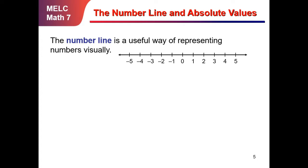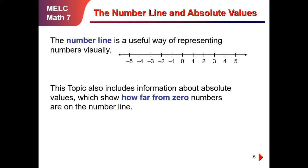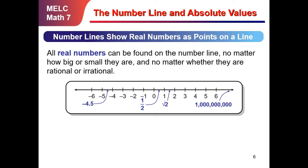The number line is a useful way of representing numbers visually. If you want to know the meaning of a number line, it's just a line with numbers on it. This topic also includes information about absolute values, which show how far from zero numbers are on the number line. Number lines show real numbers as points on a line. All real numbers can be found on the number line, no matter how big or small, and no matter whether they are rational or irrational.